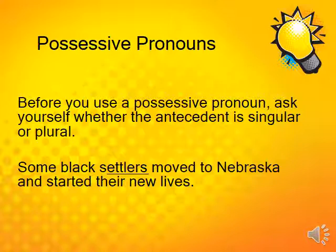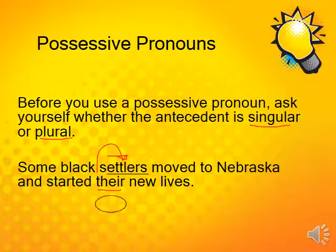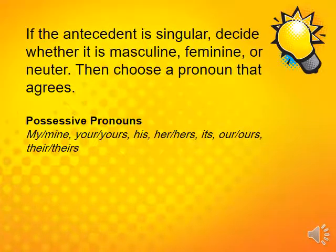Before you use a possessive pronoun, ask yourself whether the antecedent is singular or plural — this determines the number. For example: 'Some black settlers moved to Nebraska and started their new lives.' The pronoun is 'their' and the antecedent is 'settlers,' which is plural, so 'their' is plural.